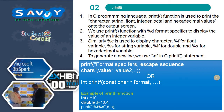Regarding printf: in C programming, the printf function is used to print character, string, float, integer, octal, and hexadecimal values onto the output screen. We use printf with %d format specifier to display the value of an integer variable. Similarly, %c for character, %f for floating point value, %s for string value, %lf for double, and %x for hexadecimal value.